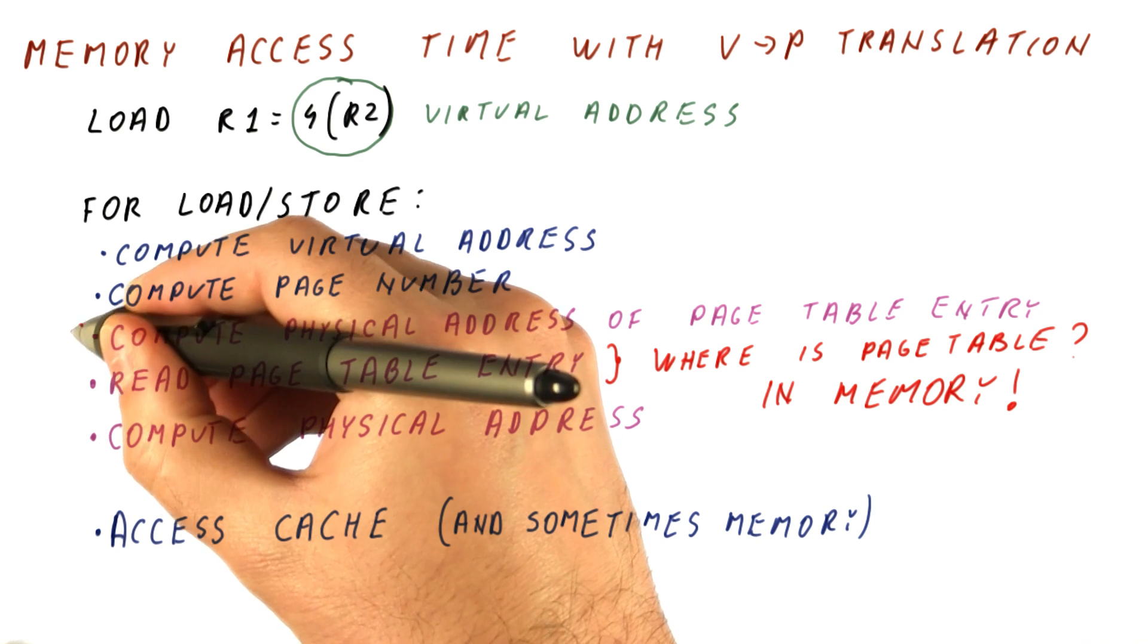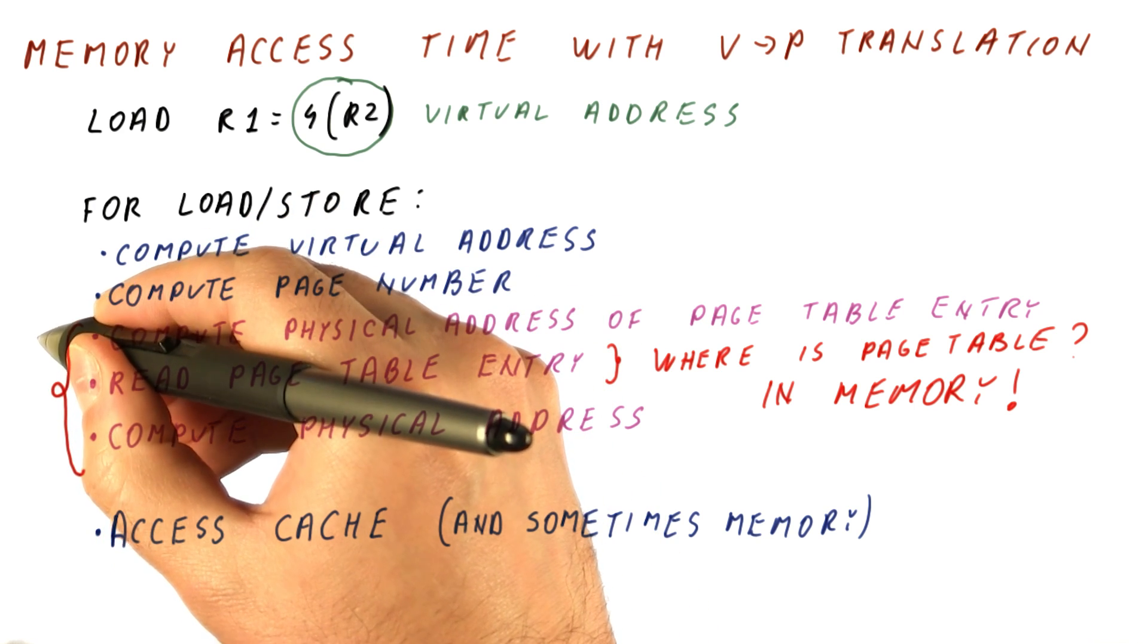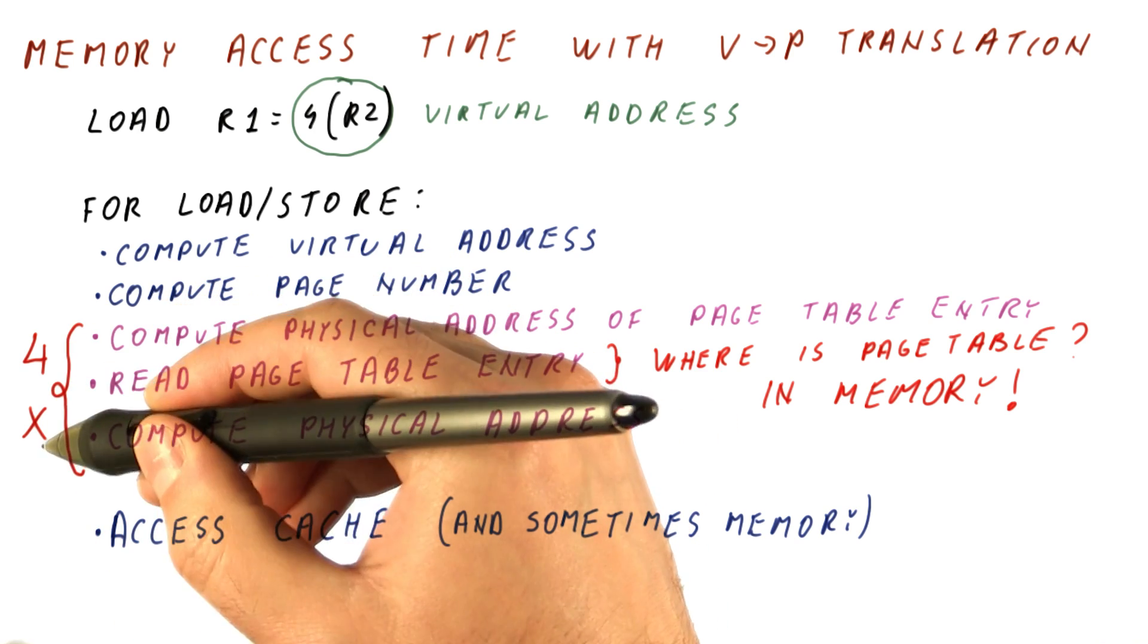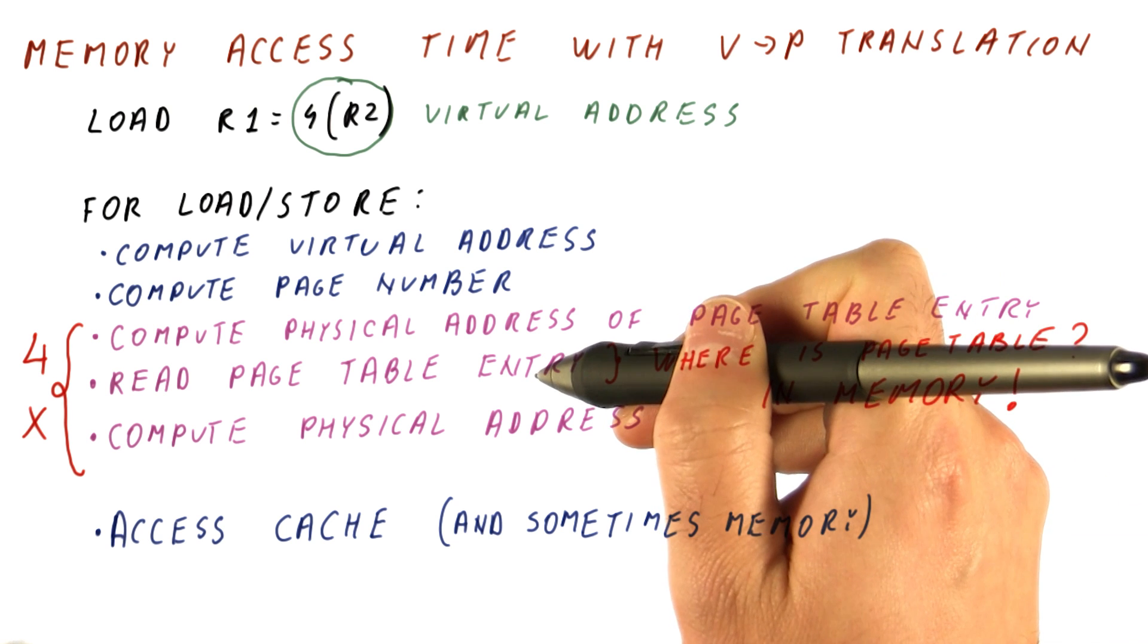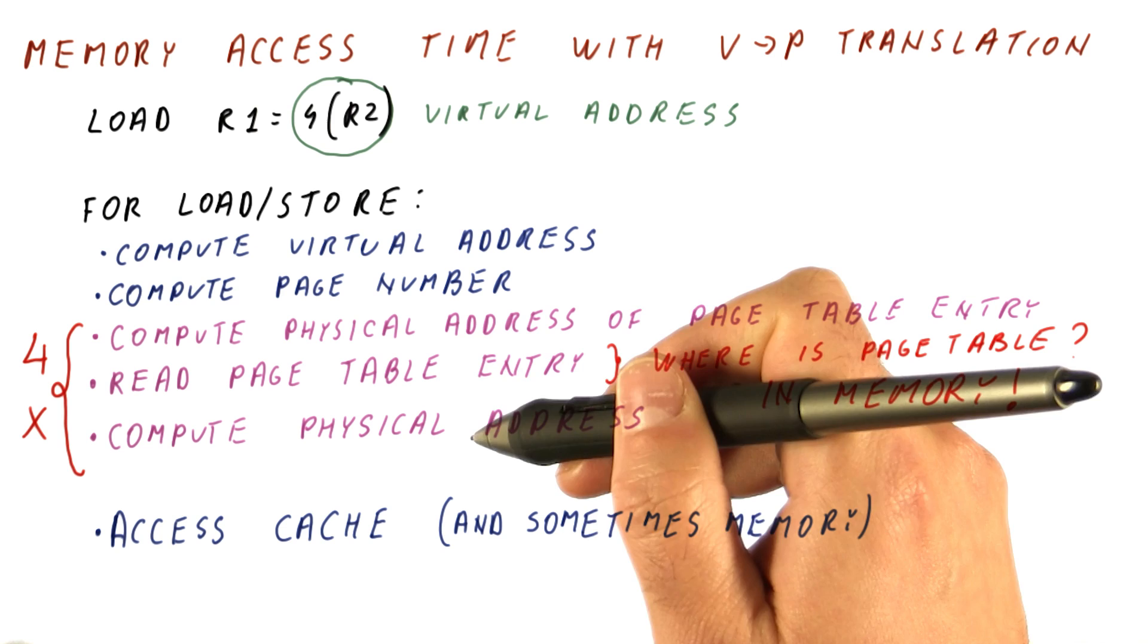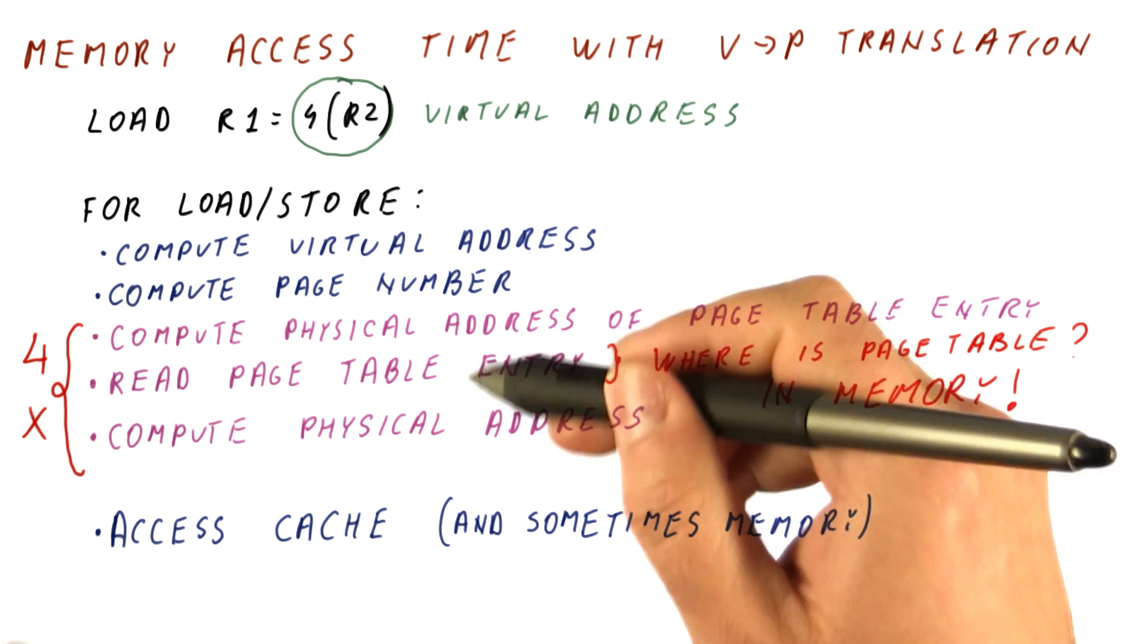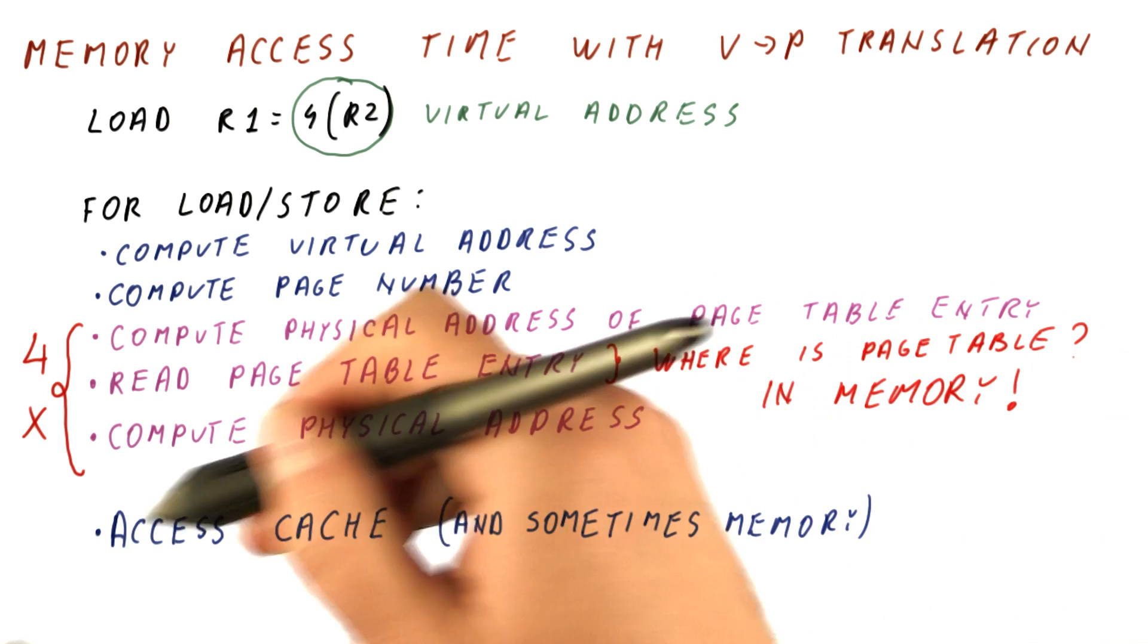Things are even worse because for a multi-level page table, for example, a four-level page table, we would need to do this multiple times. For example, four times. Compute the physical address of the outermost page table, read that entry. Compute the physical address of the next page table, go ahead and do that four times. So we need four memory accesses to read the four page table entries until we get the actual translation, after which we can quickly access the cache.